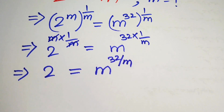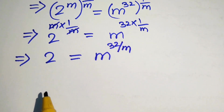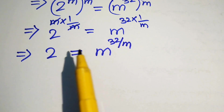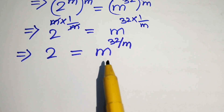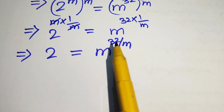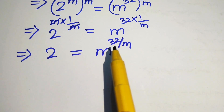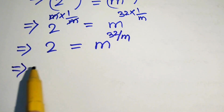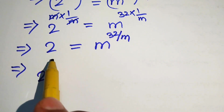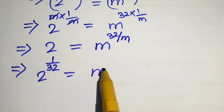In the next step, we move the term involving m to the right hand side and constant terms to the left hand side. Since 32 is the constant, we move it to the left hand side. To remove 32 from the right hand side, we take the 32nd root on both sides — in other words, we take the exponent 1 over 32 on both sides.